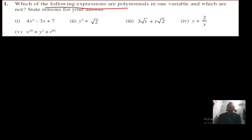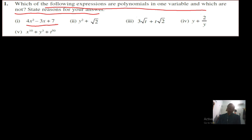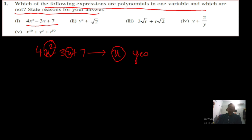The question asks which of the following are polynomials in one variable and which are not, and to give reasons. Taking the first expression, 4x² minus 3x plus 7 — if you see here, there is only one variable and that variable is x. So yes, it is a polynomial in one variable because it has only one variable, x.